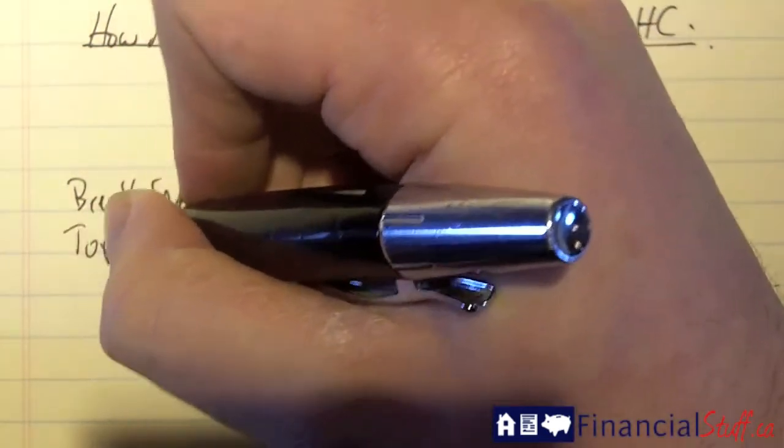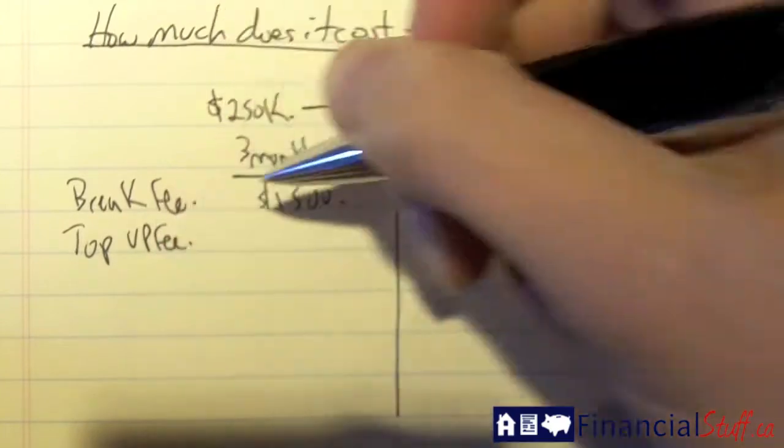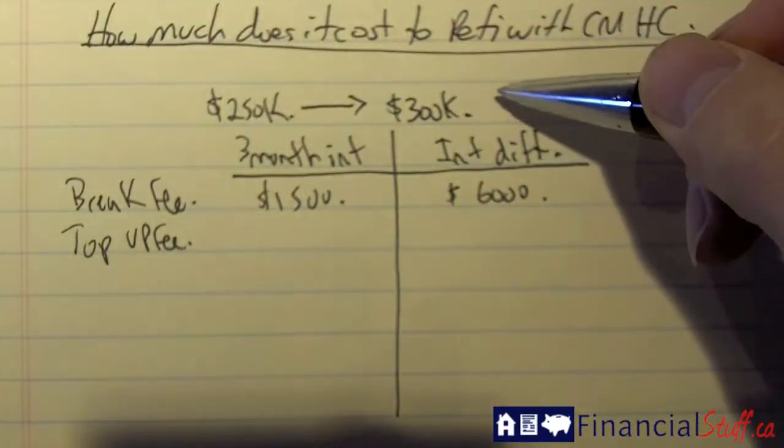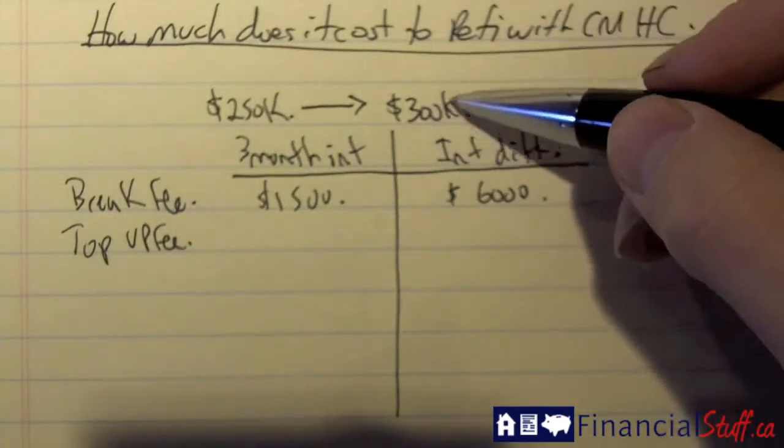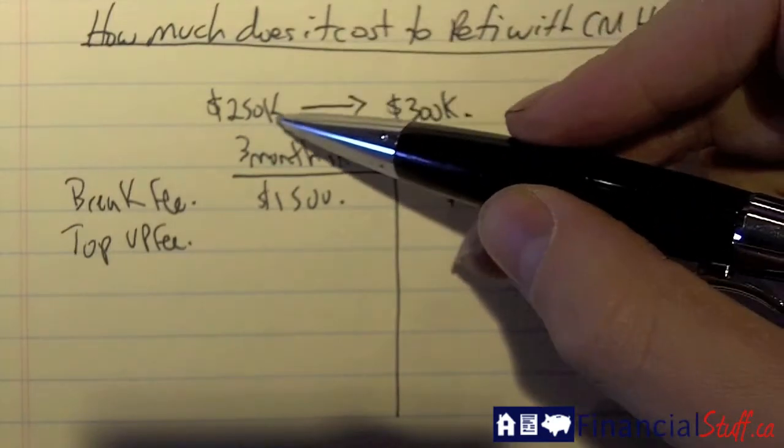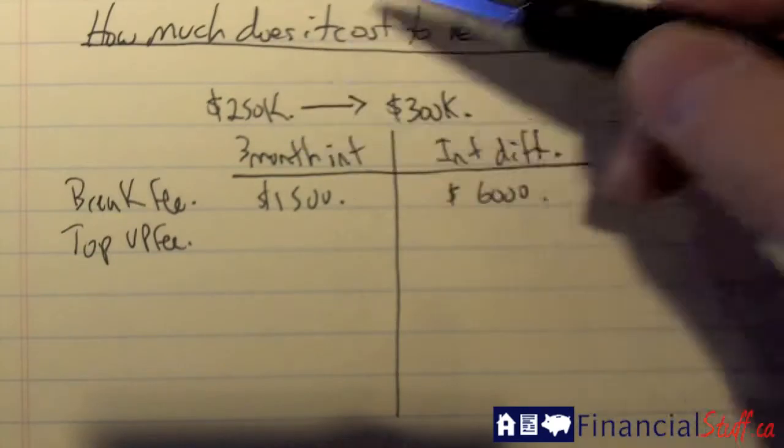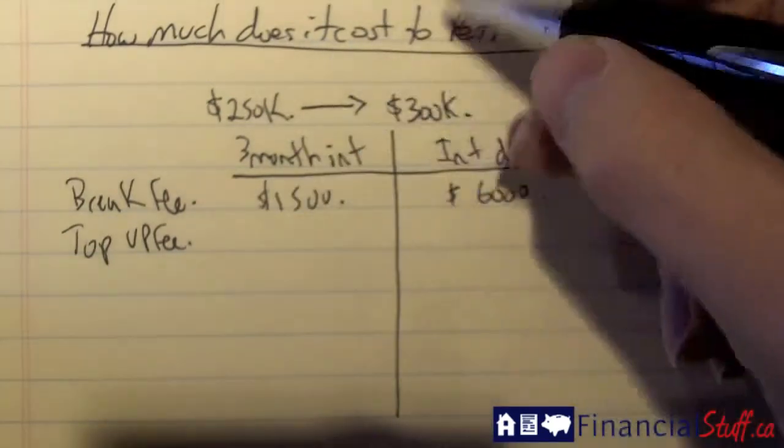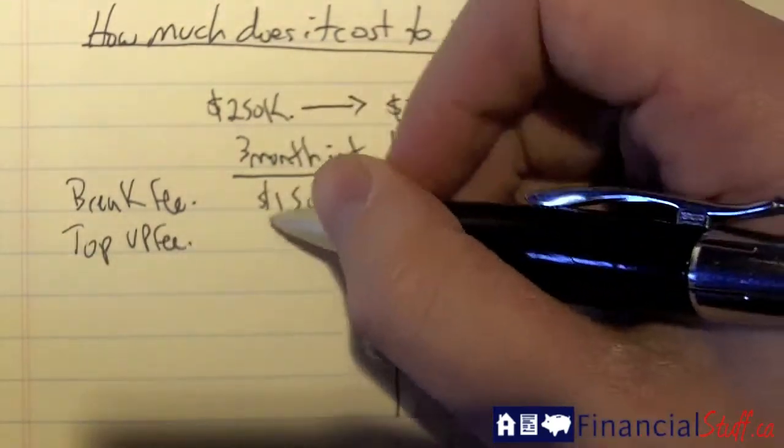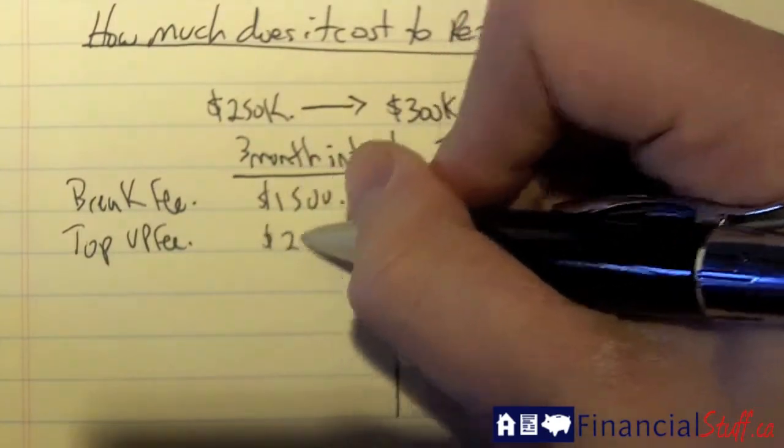Top-up fee. CMHC is not going to charge you a whole brand new set of fees to get $300,000. What they're going to do is charge an extra top-up fee from $250,000 to $300,000. They're going to be basically charging, usually it's 3-4% a top-up fee. Based on $50,000, let's say that might be approximately $2,000.